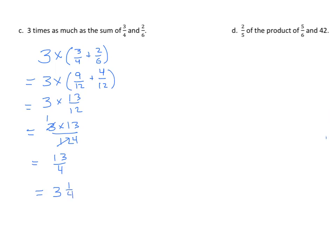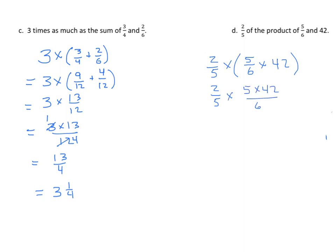Next we have 2 fifths of the product of 5 sixths and 42. We work the parentheses first: 5 sixths times 42. We can divide both 6 and 42 by 6, giving 5 times 7, which is 35. So now we have 2 fifths times 35. Since 5 and 35 are both divisible by 5, we simplify and our answer is 14.